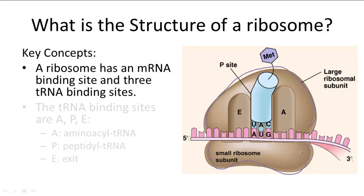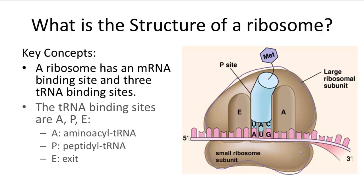Within the large ribosomal subunit, there are three zones for tRNA binding, and each zone or site has a different purpose. They're labeled from right to left: A, P, and E, which stand for aminoacyl tRNA, peptidal tRNA, and EXIT, respectively.